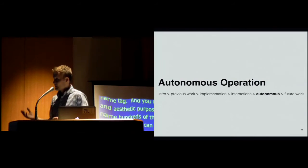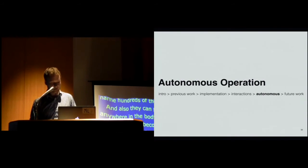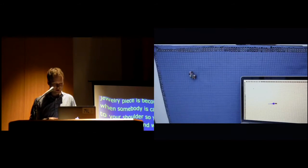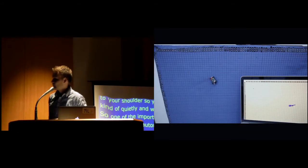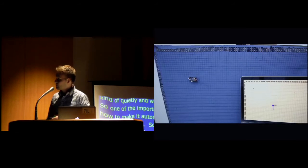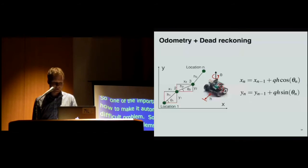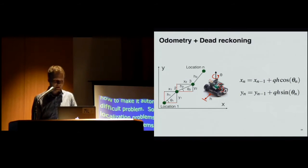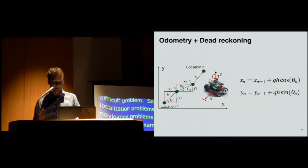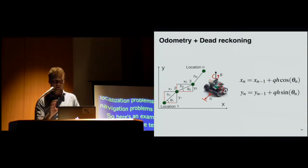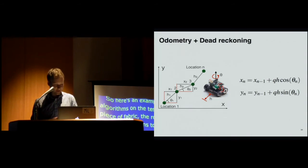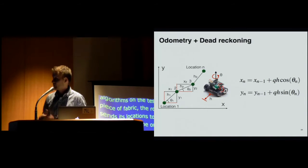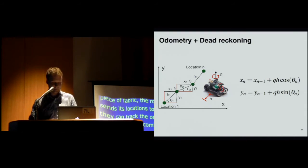So one of the important aspects was how to make it autonomous, which was a difficult problem. So we have to solve localization problems and there's the navigation problems on the fabrics. So here's an example of our algorithms on the testbed, a vertical piece of fabric. The robot can send its location to the computer and it can track these on-board sensors. And we use the combination of odometry, which is using the infrared encoders for distance, and we use the IMU to get the rotation angle because the encoder, they can slip, but the rotation is more accurate. And using kind of dead reckoning, which is relative navigation, using just simple trigonometric functions, we can estimate where it is based on its initial location.